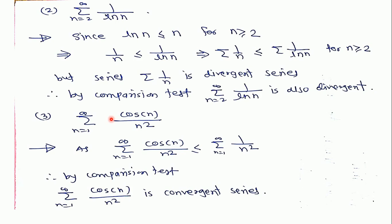See another example: the series cos(n)/n². We know that cos(n)/n² is less than or equal to 1/n². This is a p-series with p greater than 1, so it is a convergent series. Therefore by the comparison test, series cos(n)/n² is also convergent.